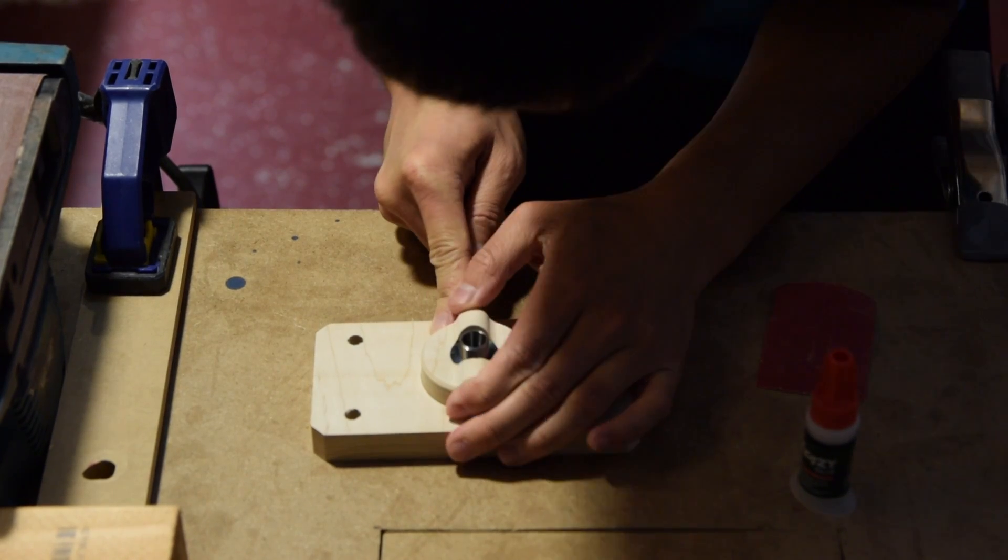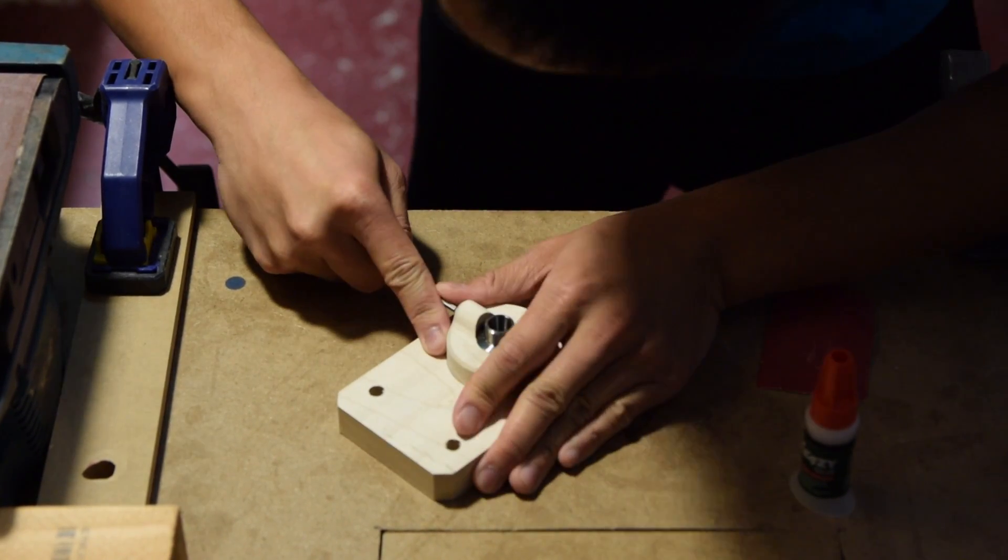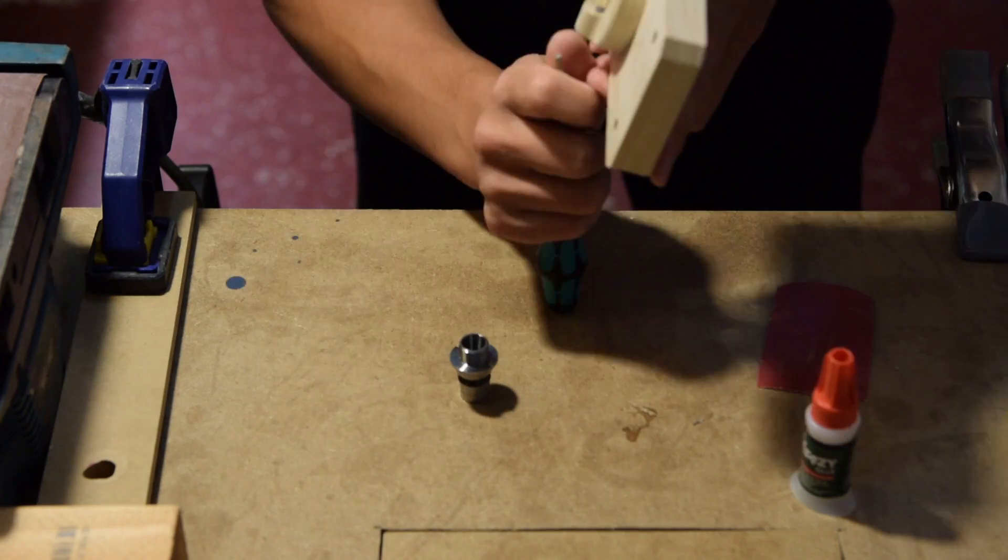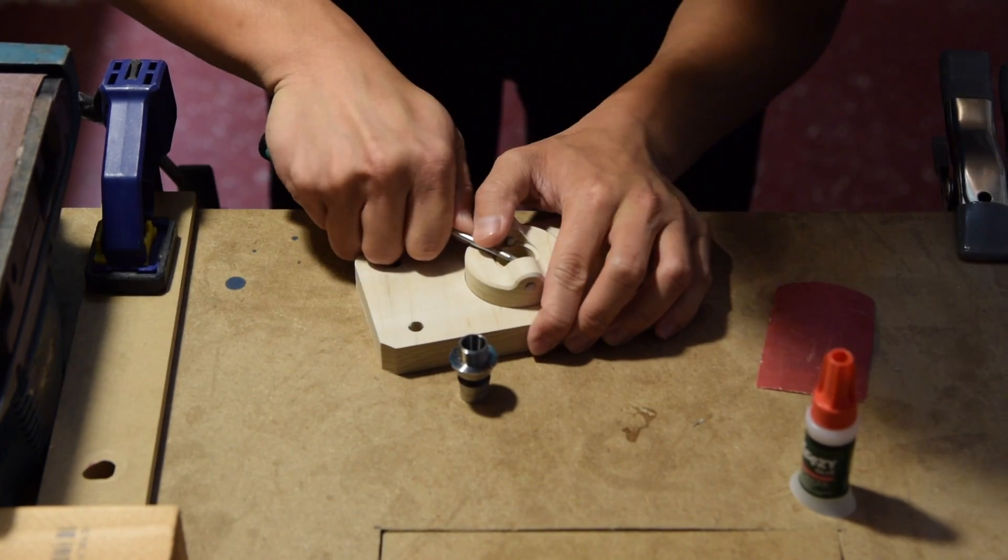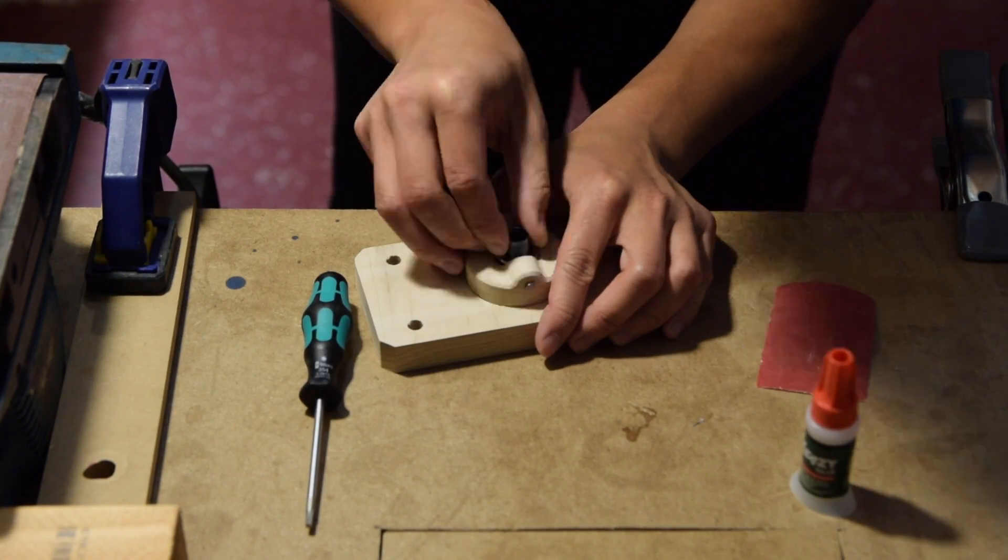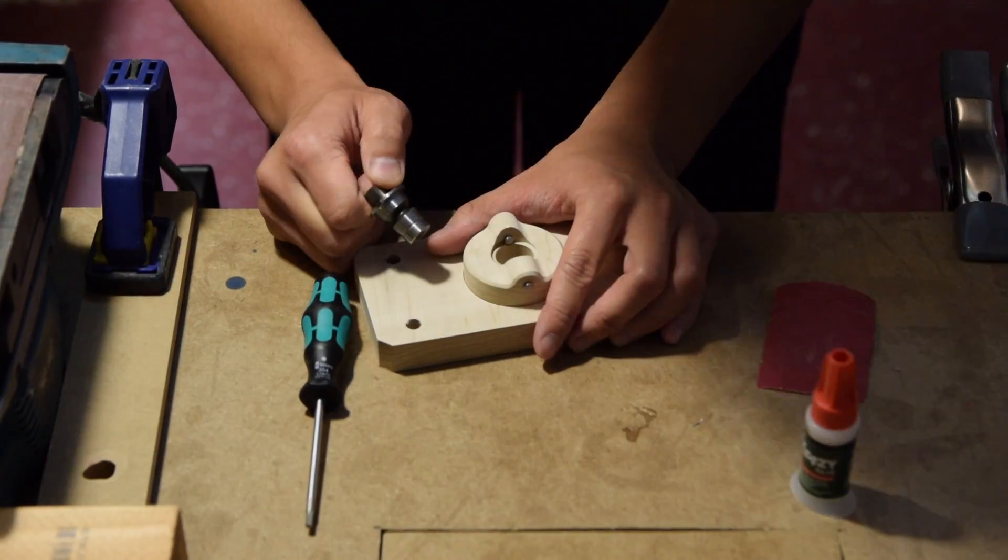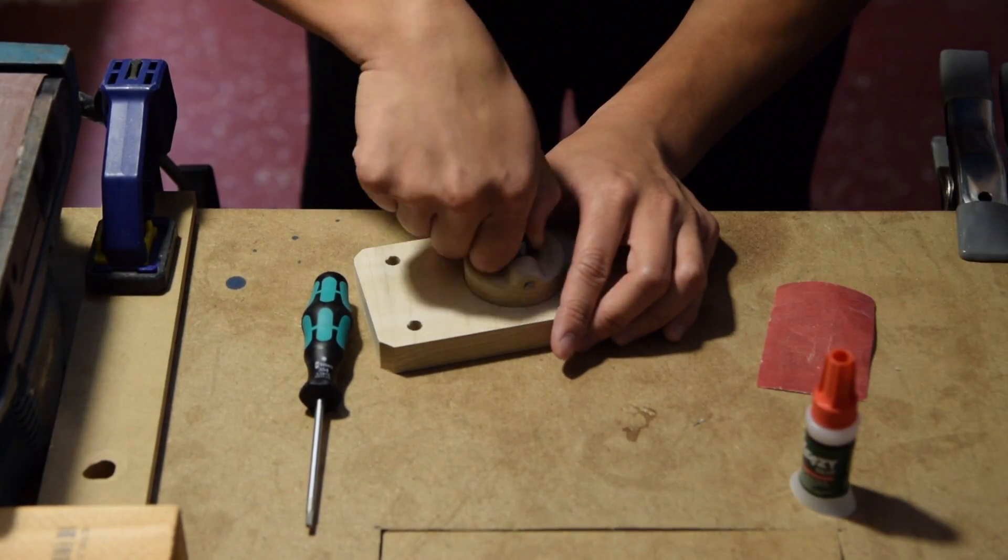So I globbed on some CA glue, inserted a pin, and tried to get it to set just right. What I didn't realize was just how runny my crazy glue was. It seeped out of the hole and into places it shouldn't have. I got CA glue on my tool holder and almost glued my fingers to the fixture.